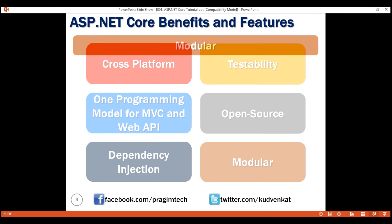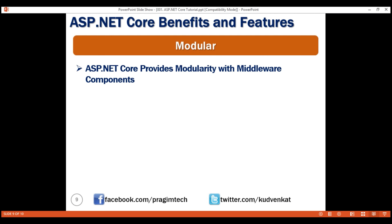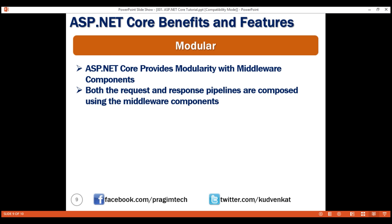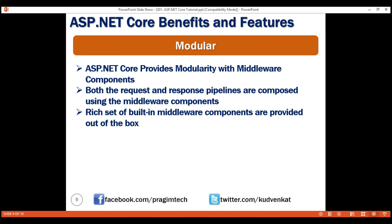Modular: ASP.NET Core provides modularity with middleware components. We use these middleware components to compose both the request and response pipelines. Out of the box, ASP.NET Core already includes a rich set of built-in middleware components, and we can also create our own custom middleware components. As we progress through the course, we'll discuss in detail what middleware components are and how to use them to compose request and response pipelines.